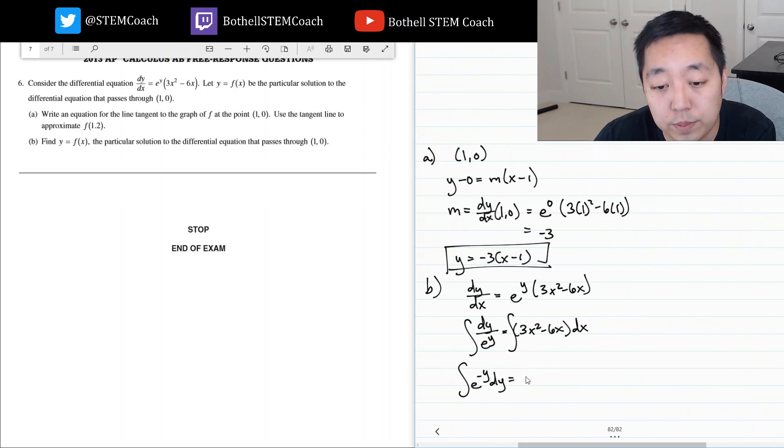So then I get negative e to the negative y, and the integral of this is x cubed minus three x squared by power rule plus c.